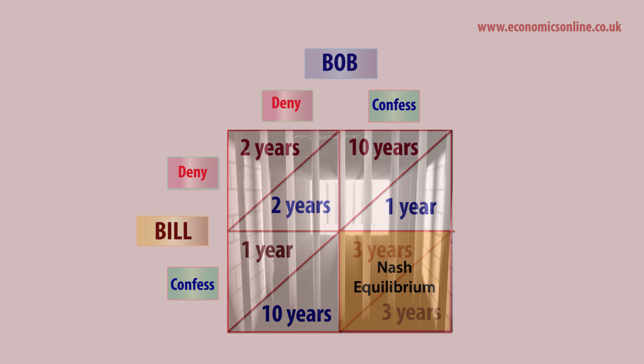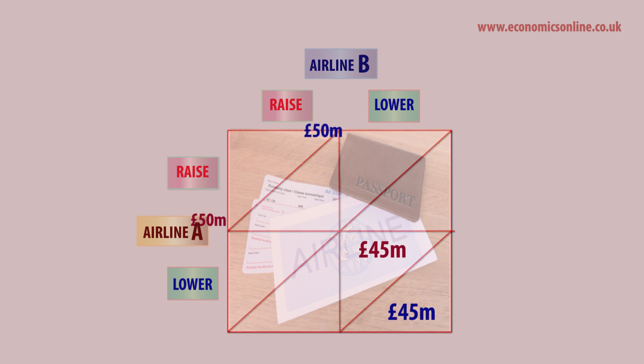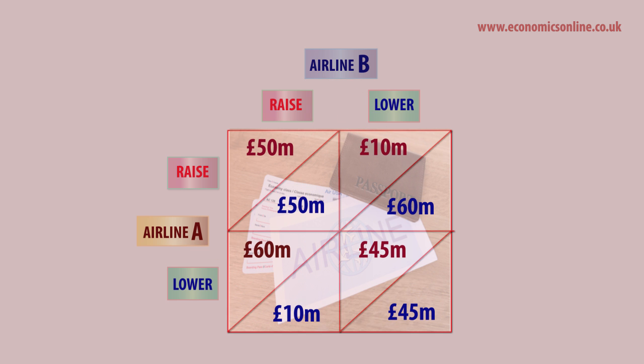If this is applied to decisions taken by firms, we can see that the interdependence of each firm forces it to make certain decisions. Airlines have to decide how to compete and what prices to charge. In theory, both raising and lowering price could make them better off, depending on what the other airline does. Assuming just two airlines, the dominant strategy will be to lower price to gain £45 million. If one raises price and the other lowers, the firm raising price will lose market share and only achieve £10 million in profits.